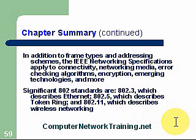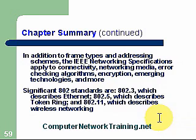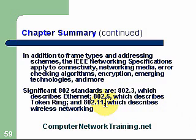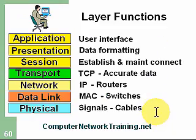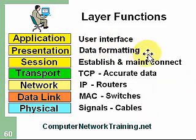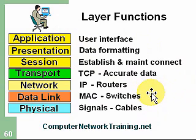Regarding the significance of 802 standards — some are more important than others. Key ones include 802.3 for Ethernet, 802.11 for wireless, and 802.5 for token ring. It's really important to understand the function of each OSI layer and also the equipment — routers, switches, and cables. These are usually discussed at the first three layers: physical, data link, and network.